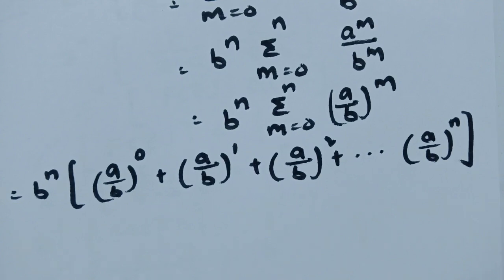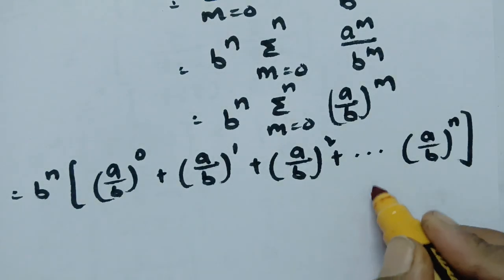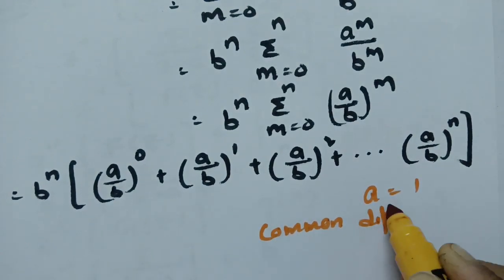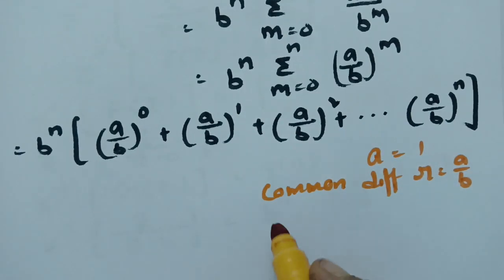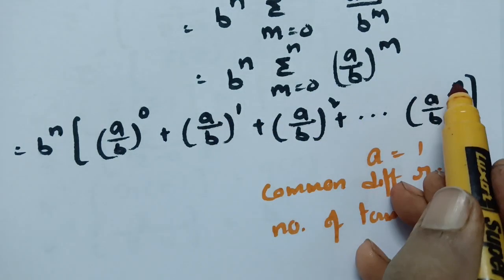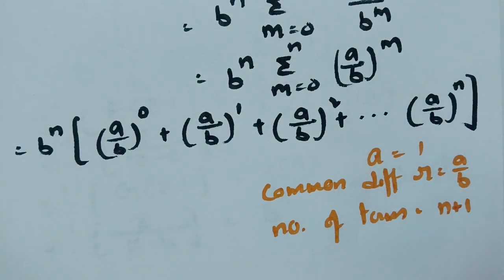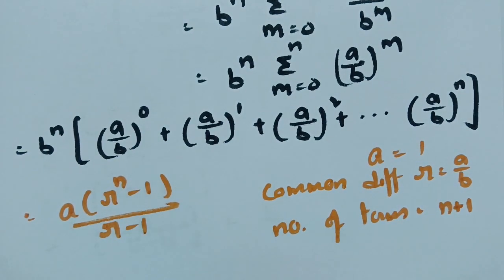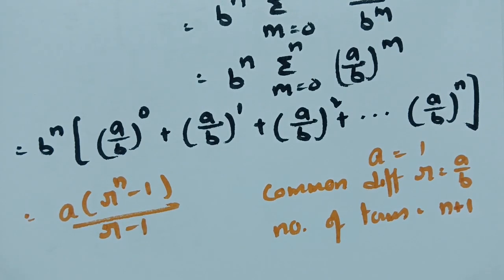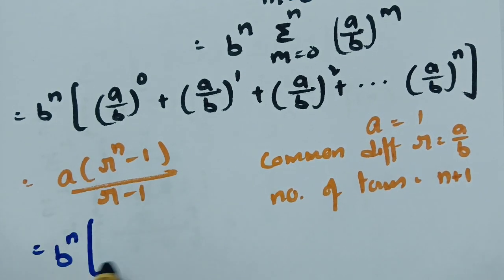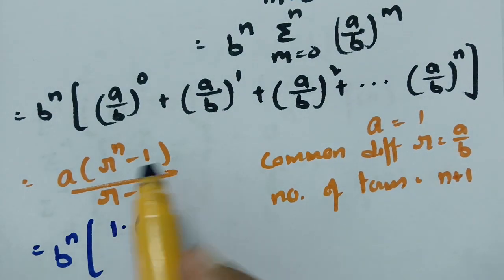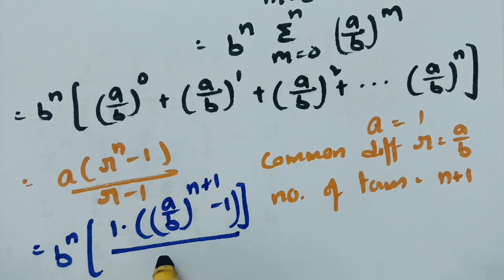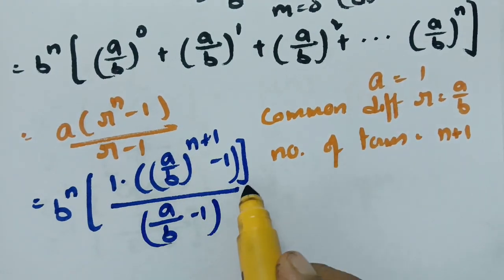This is a geometric progression. The first term a equals 1, common ratio R equals A by B, and the number of terms is n plus 1. Applying the GP sum formula: a times (R power n+1 minus 1) by (R minus 1), we substitute: first term is 1, R is A by B, number of terms is n plus 1, giving (A/B)^(n+1) minus 1, all divided by (A/B minus 1). So this becomes B power n times [(A power n+1 by B power n+1) minus 1] divided by [(A by B) minus 1].